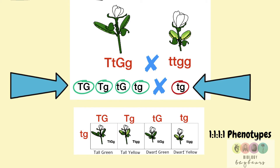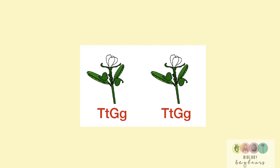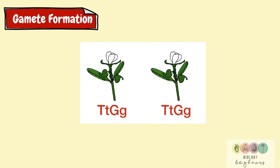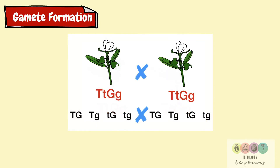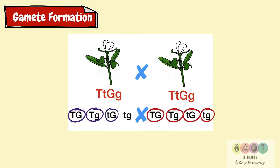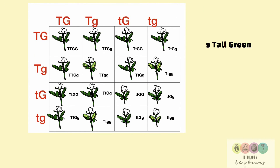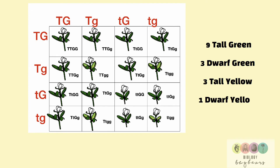Let's take another example: we'll cross two heterozygous dominant plants. The first thing we do is look at gamete formation — any T allele can go with any G allele, giving four different combinations of gametes for each parent plant. Any T can go with any G because they are on different chromosomes. The result of this dihybrid cross is a very particular ratio of phenotypes: nine tall and green, three dwarf and green, three tall and yellow, and one dwarf and yellow — a 9:3:3:1 ratio.